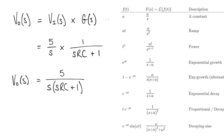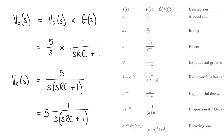Our system response doesn't quite match the table entry, so we need to make a few adjustments. First, we take the coefficient 5 outside of the fraction, writing VO of S as 5 multiplied by 1 over S times the bracket SRC plus 1. The reason is that in the table entry both A values must be consistent — A on the numerator and S plus A in the denominator. With our formulation we have 1 on top and plus 1 in the bracket, which is more consistent.